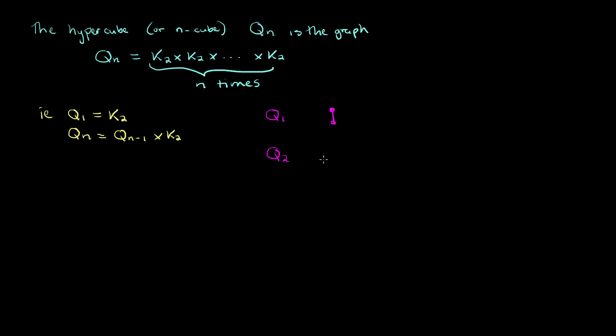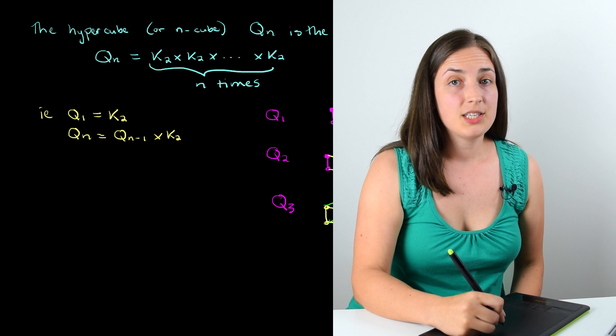Now, if you look at Q2, you have to take K2 and Cartesian product it with K2. You're going to end up with this four-cycle. Next, if you look at Q3, we take two copies of Q2 and we make the Cartesian product as we normally would with K2. We end up with what looks exactly like our normal three-dimensional cube.